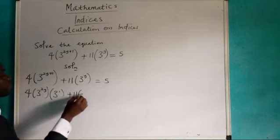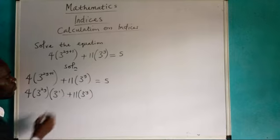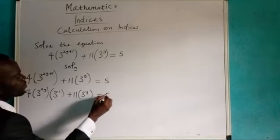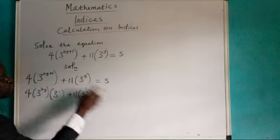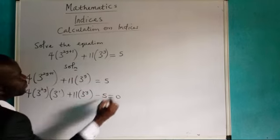And this one still remains 3 power y still remains in brackets. Remember I told you that we need to move this one over become minus 5 equals 0.